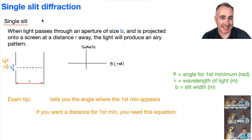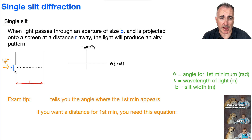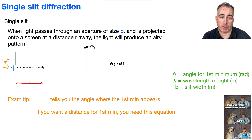We're going to talk about single slit diffraction. By single slit, we just mean there's one opening that the light is passing through. We're going to consider light passing through an aperture of size B, and very often we're going to be considering just circular apertures, projected onto a screen at a distance R away.